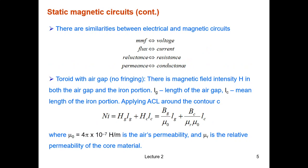There are similarities between the electrical circuit and magnetic circuit. Here, the MMF is equivalent to voltage, the flux is similar to current, reluctance is similar to resistance, and finally permeance is similar to conductance. So that's the first example we looked at, the toroid.